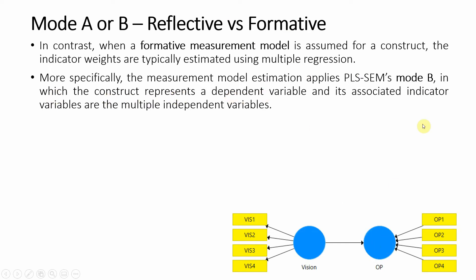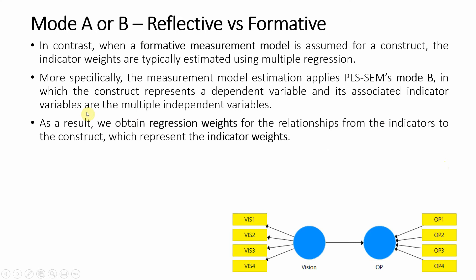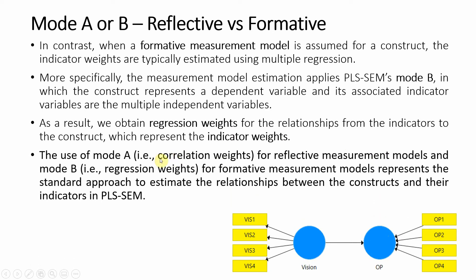Here, the construct is your dependent variable and its indicators are your independent variables. Formative constructs are validated and specified in a different way. As a result, we obtain regression weights here, and the relationship from the indicators to the constructs represents indicator weights. Mode A — correlation weights — is for reflective measurement, whereas Mode B is for formative measurement.